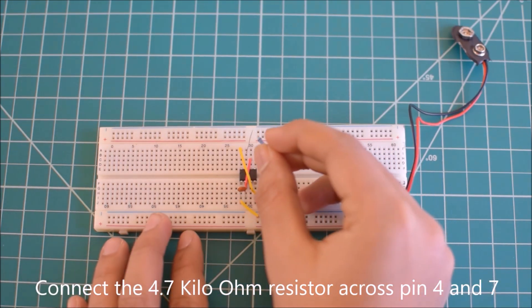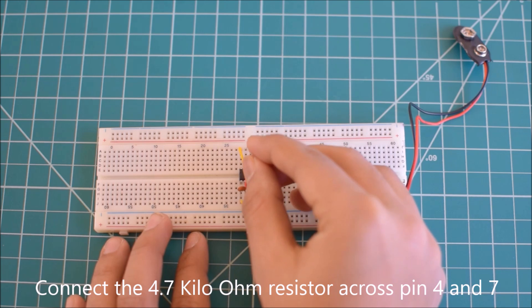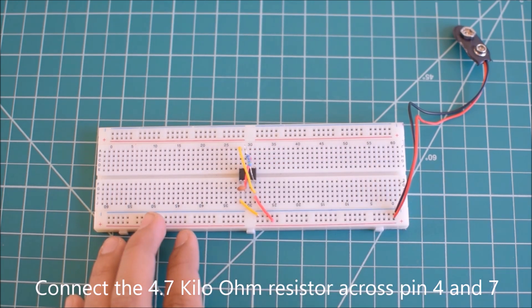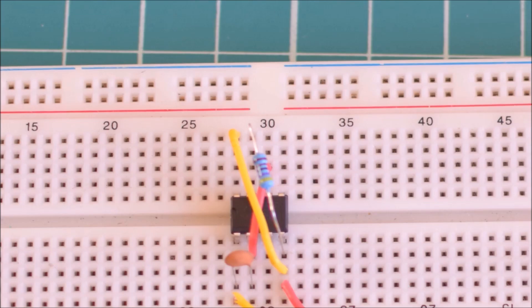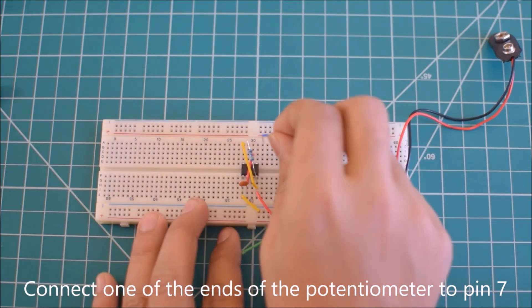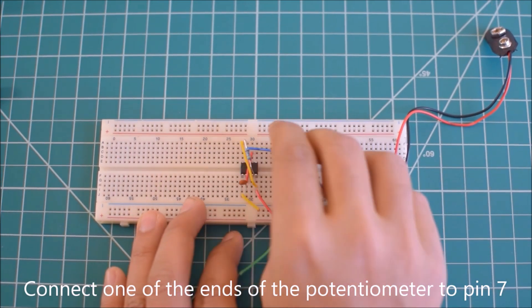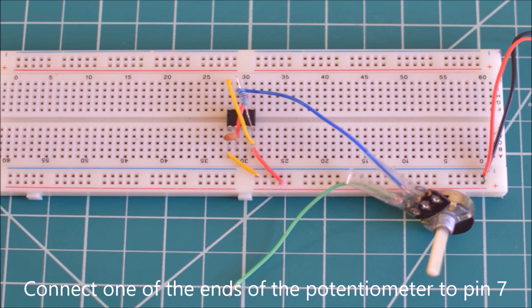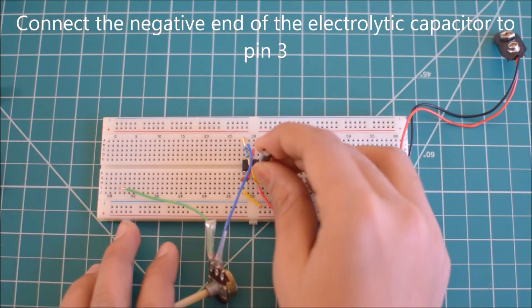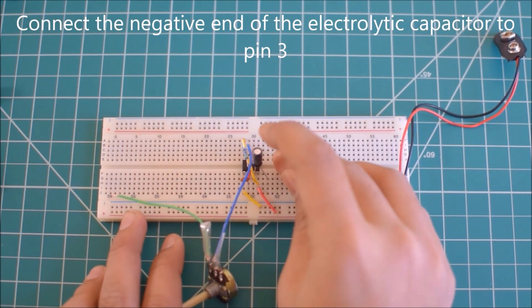Put the 4.7 kOhm resistor across pin 4 and 7. Connect one of the potentiometer to pin 7. Connect the negative end of the electrolytic capacitor to pin 3.